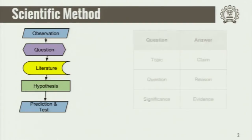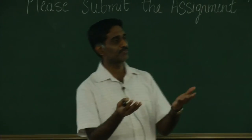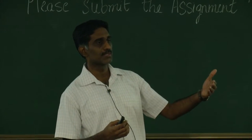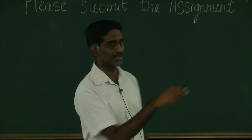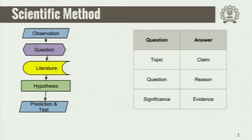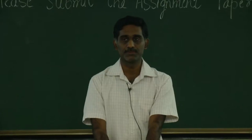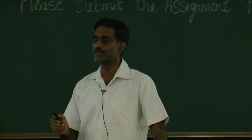So how do we begin? We need to write this in the form of a question and an answer. Just as when you read a paper, you wrote it as a question — a question has a topic, the question itself, and its significance. Similarly, the answer is the claim, reason, and evidence. When you read somebody else's paper, they have already completed the work, so all these things were clear. But now you have not completed the work; you have just started. You need to write all of these things before you even begin, because this is what is going to guide you on what to do.